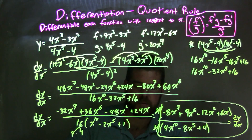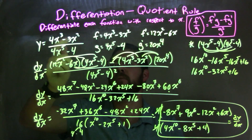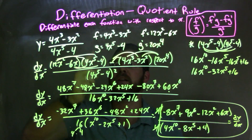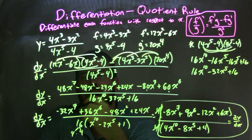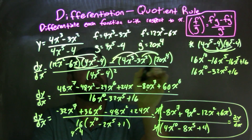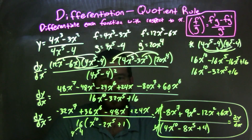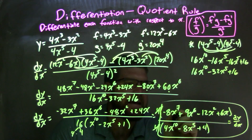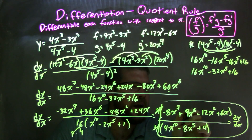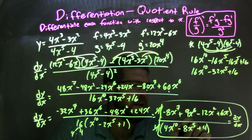Let's recap. We were given y equals 4x to the third minus 3x squared over 4x to the fifth minus 4. I labeled the numerator f and denominator g, then found f prime and g prime respectively. From there I applied the quotient rule — f prime times g, minus f times g prime, all over g squared — and then simplified. The simplification was tricky: pulling things out, recognizing patterns, bringing things back in. Eventually, canceling the 4s, I was left with the final derivative: dy/dx equals negative 8x to the seventh plus 9x to the sixth minus 12x squared plus 6x, all over 4x to the tenth minus 8x to the fifth plus 4.